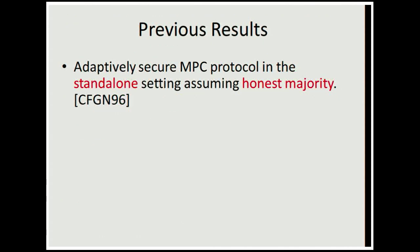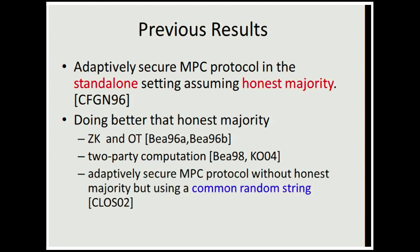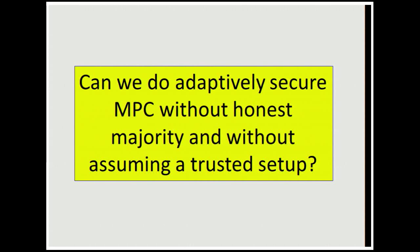What are the previous results? This notion was introduced by CFGN, and they obtained an adaptively secure MPC protocol in the standalone setting with honest majority. The first results for the setting of zero-knowledge and OT were by Beaver, later extended to general two-party computation by Beaver, Katz, and Ostrowski. The first result achieving some form of adaptively secure multi-party computation without honest majority was by CLOS, but they got it in the common random string model with UC security. The question we ask is: can we do adaptively secure MPC without honest majority and without any trusted setup like a common random string?